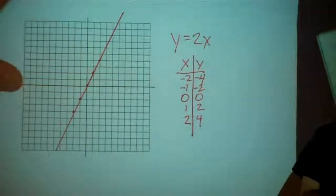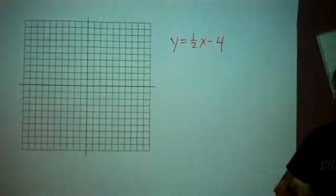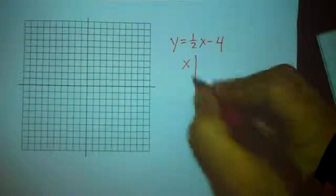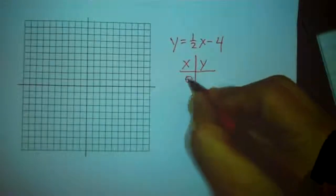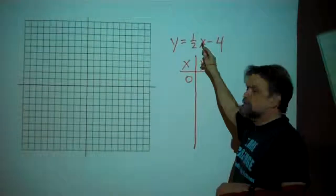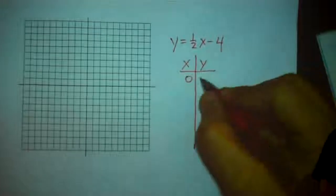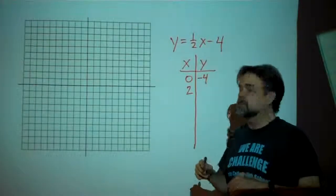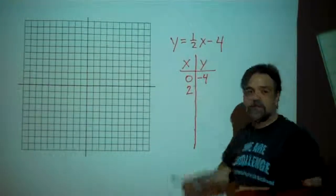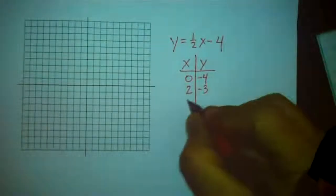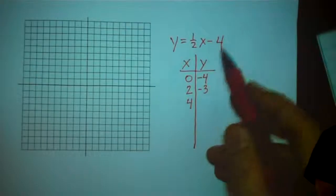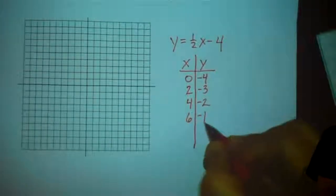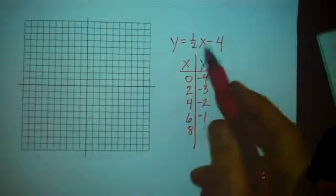Let's look at one more — the line y equals one-half x minus 4. I'll draw my table and start with x being 0. I'm going to count by 2's this time because I'm taking half of the number, and taking half of an even number is easier. When x is 0, one-half of 0 is 0, minus 4 is negative 4. When x is 2, one-half of 2 is 1, minus 4 is negative 3. When x is 4, one-half of 4 is 2, minus 4 is negative 2. When x is 6, one-half of 6 is 3, minus 4 is negative 1. When x is 8, one-half of 8 is 4, minus 4 is 0.